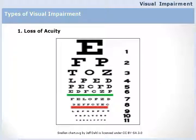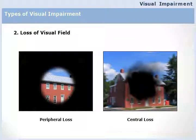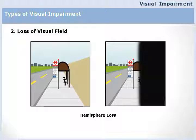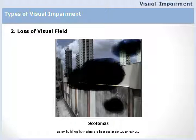Different eye conditions have different implications. One of the most common is loss of visual acuity — blurred vision — like watching through a dirty window. There can also be loss of visual field: a person might only see in the center but not the sides, called peripheral loss, or see the sides but not the center, called central loss. There can be hemisphere loss where only half the visual field remains, and scotomas where vision exists only in patches with the rest appearing dark.